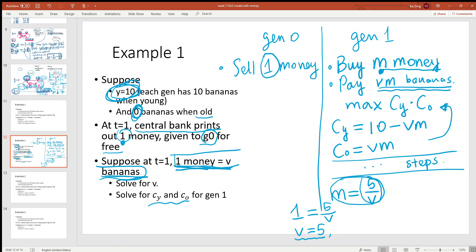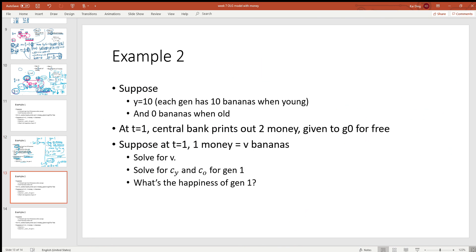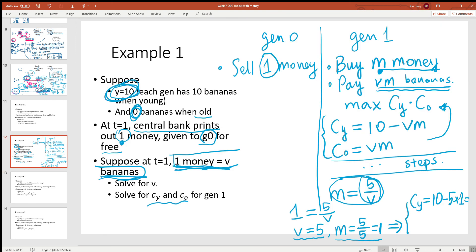When v is equal to 5, we can also plug it back here to calculate m, which is 5 divided by 5, which is equal to 1. Plug v equals 5 and m equals 1 into generation one's budget constraint. That implies c_young is equal to 10 minus v times m, 5 times 1, which is 10 minus 5, which is 5. Similarly, c_old is equal to vm: v is 5, m is 1, so 5 as well.